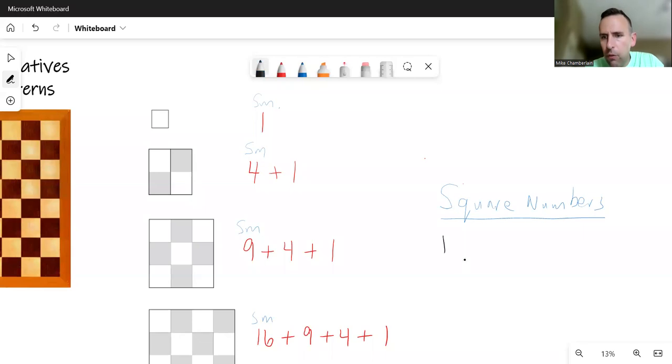Square numbers. We have 1 squared, 2 squared, 3 squared, 4 squared, 5 squared, and so on. What are those? 1 times 1 is 1, 2 times 2 is 4, 3 times 3 is 9, 4 times 4 is 16, and 25.